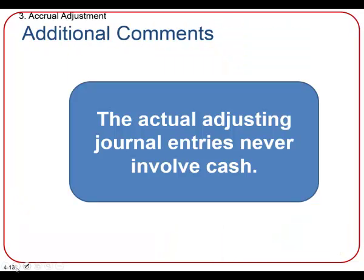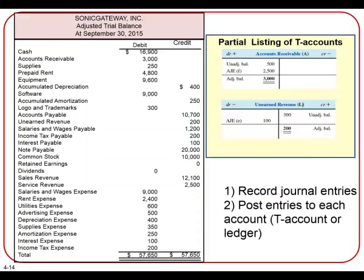One additional comment is that these adjusting journal entries never involve cash. The last thing is the adjusted trial balance before we move on to our financial statements. Before we completed our adjusting entries, we had an unadjusted trial balance, and now that we've done the adjustments, we have an adjusted trial balance. We recorded journal entries, we posted entries to each T-account, and we can take those T-account balances and actually go ahead and apply them into our trial balance — just take the balances from our T-accounts and put them on our trial balance.